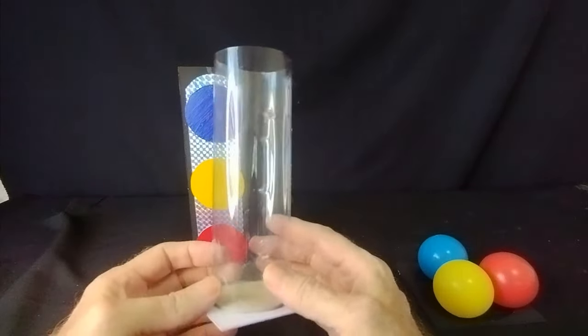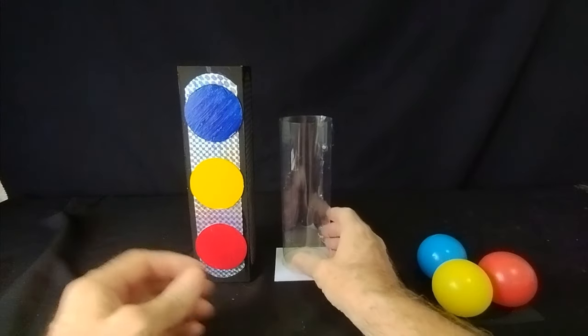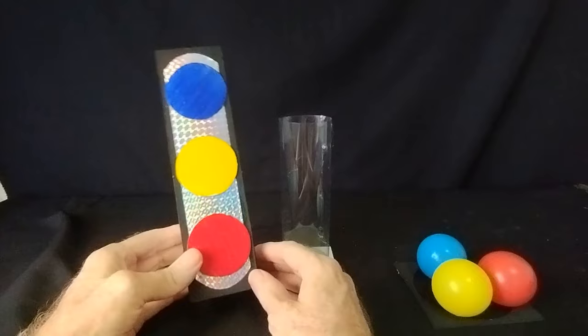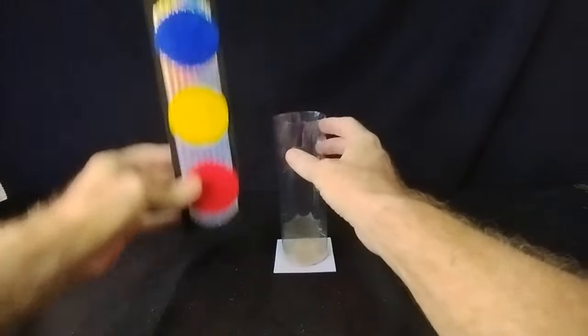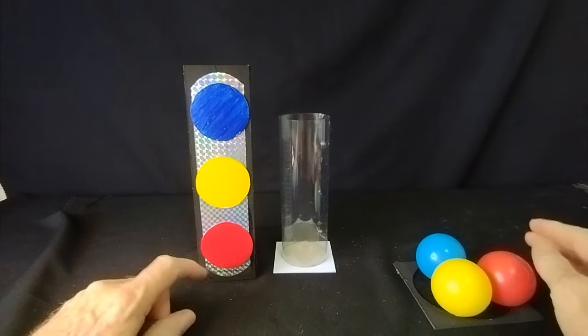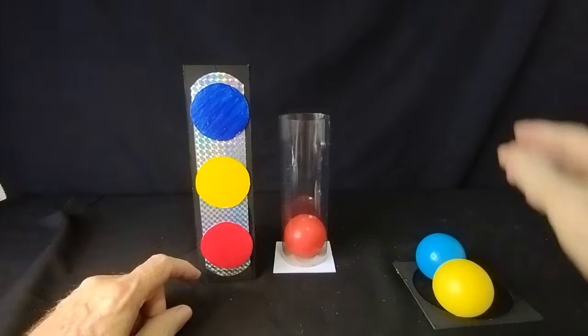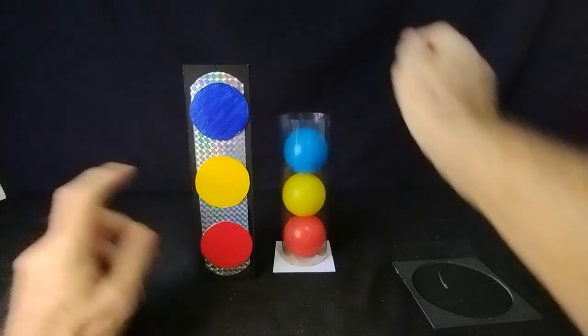So we've got a see-through cylinder, yeah that's one part of the trick and then we've got this sleeve that will fit over the top like so. And then we've got three balls and we're told that we must put the red ball in first and then the yellow ball and then the blue ball.